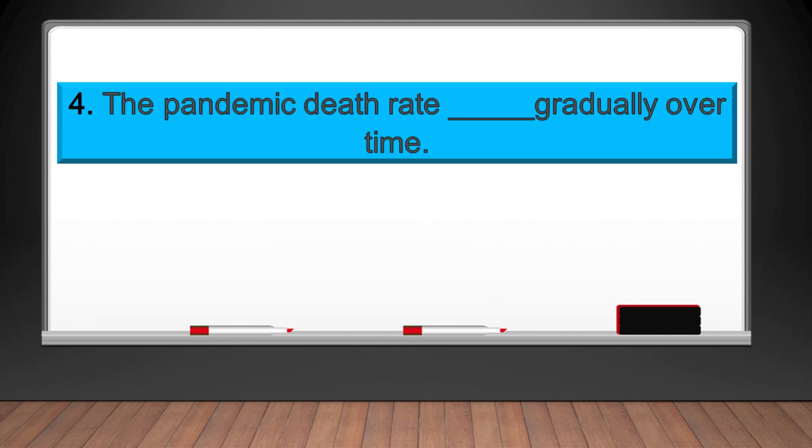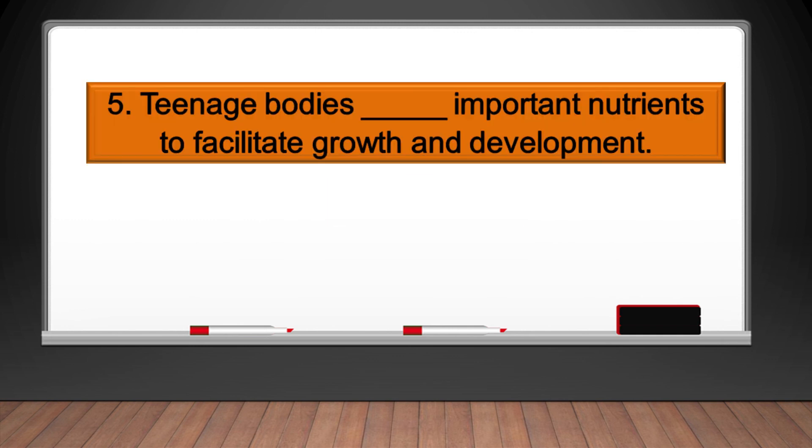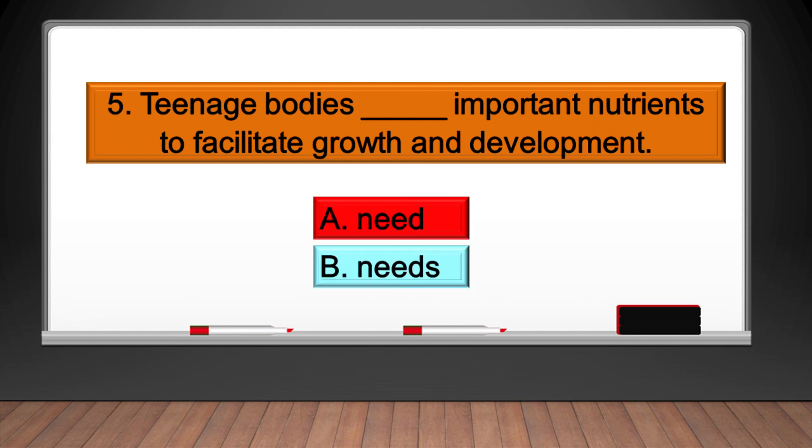Four: The pandemic death rate blank gradually over time. A: reduces, B: reduce. Your answer must be reduces. Five: Teenage bodies blank important nutrients to facilitate growth and development. A: need, B: needs. Your answer must be need.